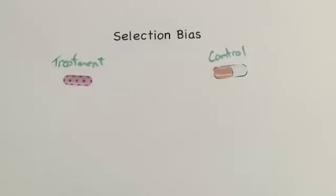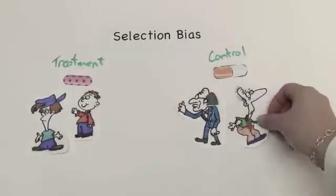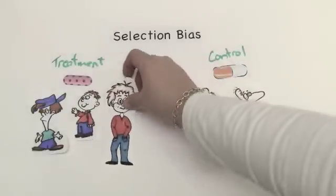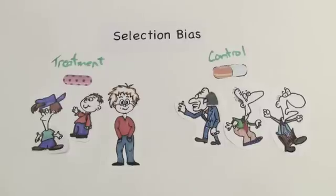That's when there are differences in the baseline characteristics of groups that are being compared. If researchers use a non-randomized process and assign young healthy people to receive the polka dot pill and older people with heart disease to receive the placebo control, then the results of comparing these two groups would be biased. The young healthy people are more likely to live longer than the older people with heart disease no matter what pill they get.